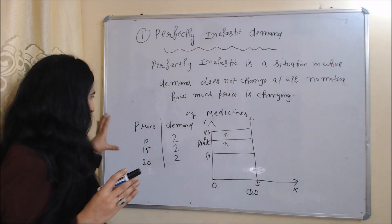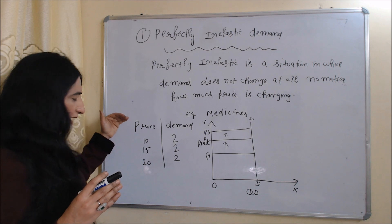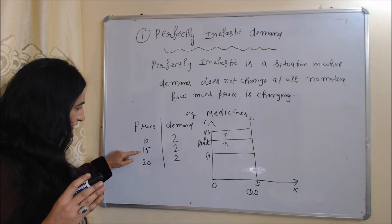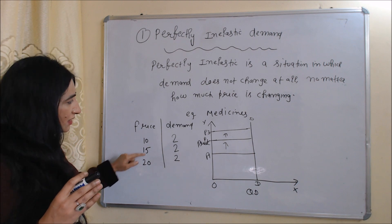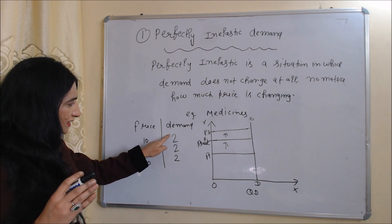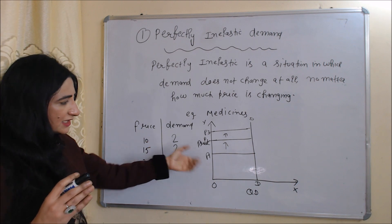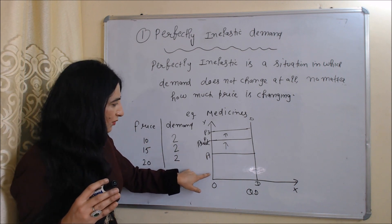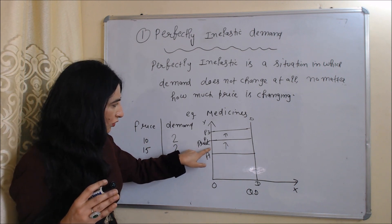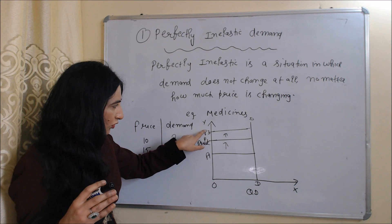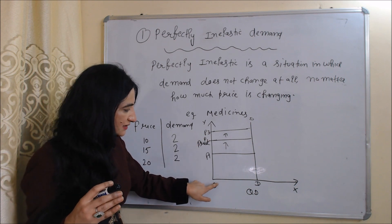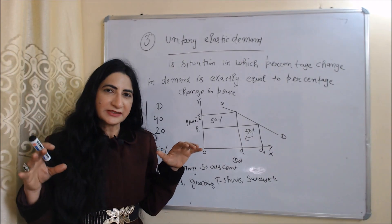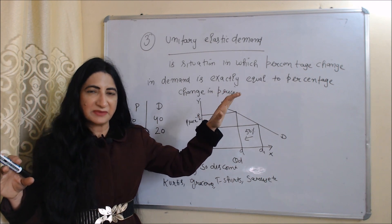In this table you can see the price of the product is increasing from 10 to 15 and from 15 to 20, but our demand remains the same at 2. You can see the same thing in this diagram — our price is increasing from OP1 to OP2, from OP2 to OP3, but our demand stays at D.